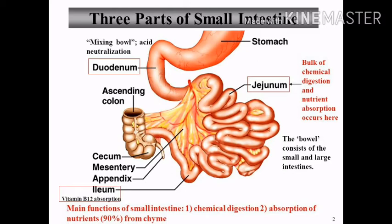Due to the alkaline bile coming from the bile duct, the food is converted from chyme form into chyle form. Now, talking about the pancreas — it secretes pancreatic juice, which comes through the pancreatic duct into the duodenum.